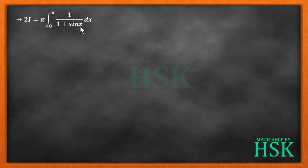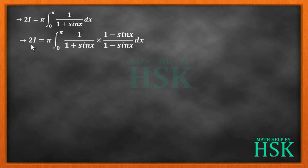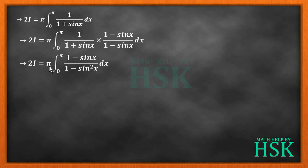Now I have to solve this definite integral. To do so, I am going to multiply 1/(1+sin x) by (1−sin x)/(1−sin x). So I get 2I = π · ∫₀^π (1−sin x)/((1+sin x)(1−sin x)) dx. The denominator (1+sin x)(1−sin x) = 1−sin²x = cos²x. So I get 2I = π · ∫₀^π (1−sin x)/cos²x dx.